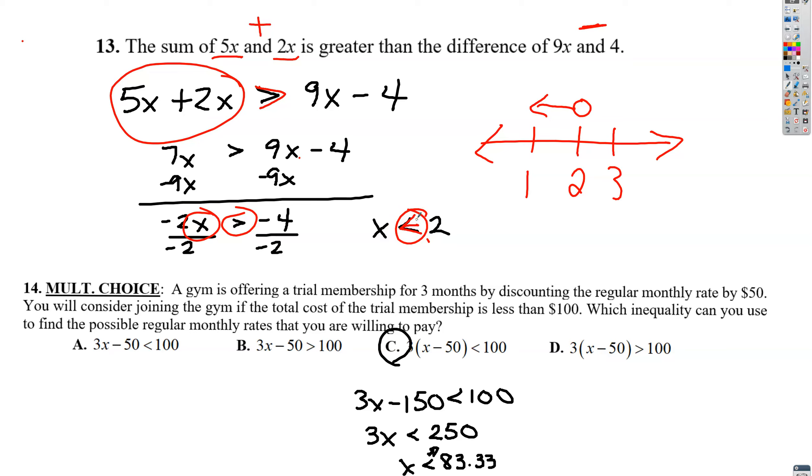All right. And then the final one. The gym is offering a trial membership for three months by discounting the regular monthly rate by $50. You will consider joining the gym if the total cost of the trial membership is less than $100. Which inequality can you use to find the possible regular monthly rates that you are willing to pay? So it says that it is being discounted by $50. Discounted means we're taking away $50, so you're going to look at these ones. All of them have a minus 50, which is good because we're discounting by $50. And it's each month that's being discounted by 50, so you're not just taking away 50 once, you're taking 50 away for each of the three months that you would be having the membership.